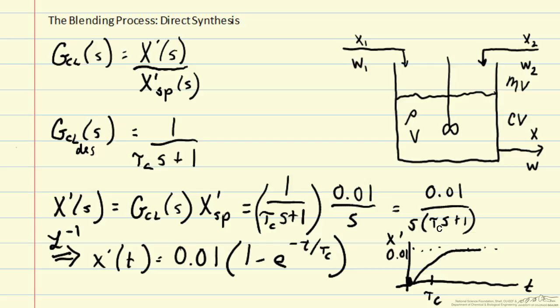That might require having a faster valve or possibly getting into impractical situations where the valve is fully open and we can't achieve the commanded value from our controller. So we should not get too greedy, but we can theoretically anyway specify tau c to be anything that we would like.